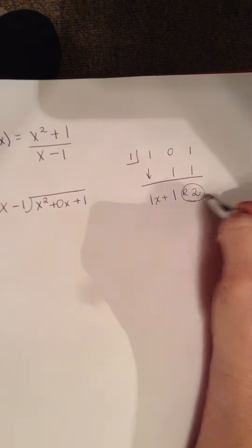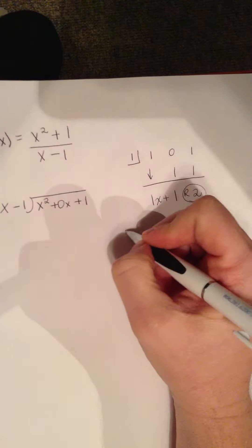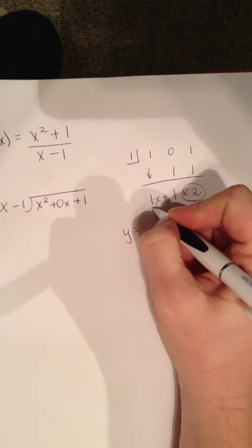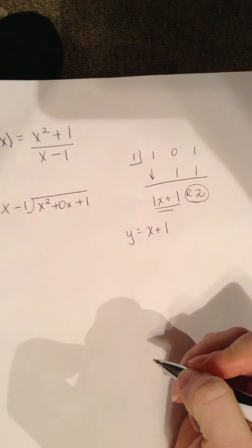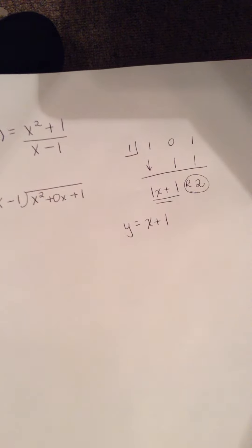When you're looking for a slant asymptote, you would disregard the remainder. So that slant asymptote is actually just this piece, x plus one. And that's all you have to do to find a slant asymptote.